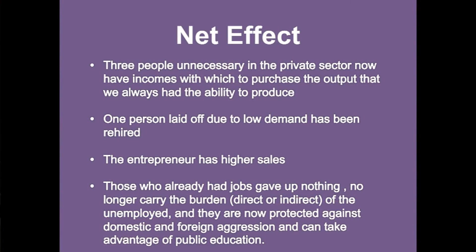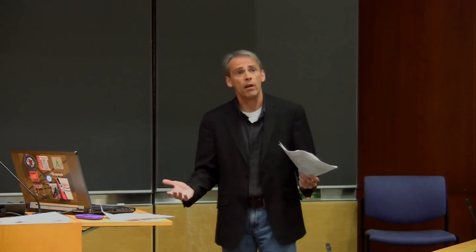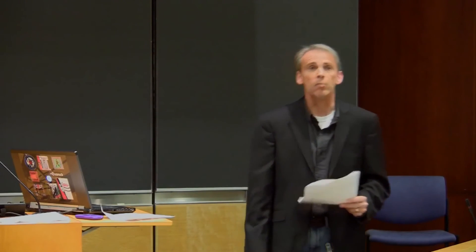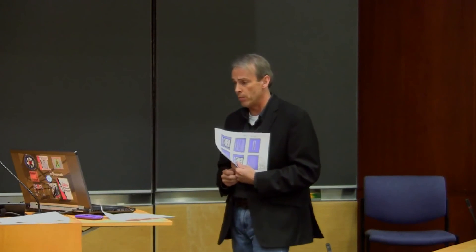The net effect is that the three people who had been unnecessary now have the income to purchase the output we always had the ability to produce. The person I laid off gets hired again. I've got higher sales. And those who already had jobs gave up nothing — there is a free lunch when we're at less than full employment. If we're in the middle of World War II with 2% unemployment and the government expands spending, then we'll have rationing, the government capturing more resources, and potentially inflation. But when we have unemployed resources, there is a free lunch — they no longer carry the burden of the unemployed, they're protected against aggression, and you can send your kids to school through public education.